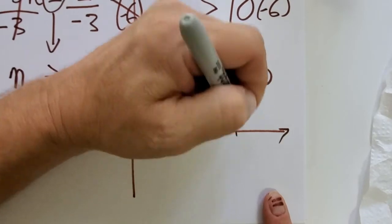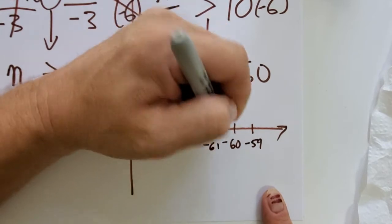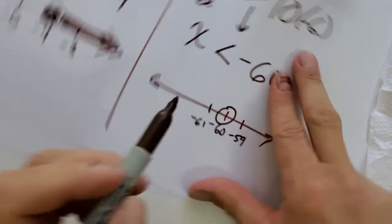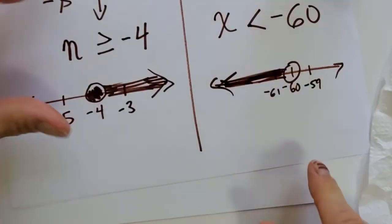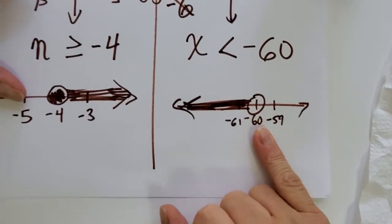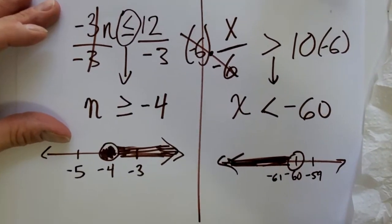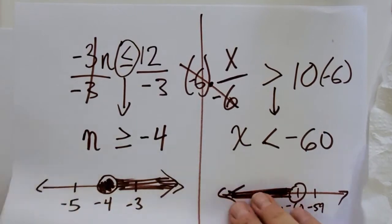Less than. So I'll put negative 60 on my number line, negative 59, negative 61. I'm going to circle the 60. Where are the numbers that are less? To the left. Does it include 60? No. Not at all. So that's how we're going to go about solving inequalities involving multiplication division. You must, please, keep an eye out for negatives.